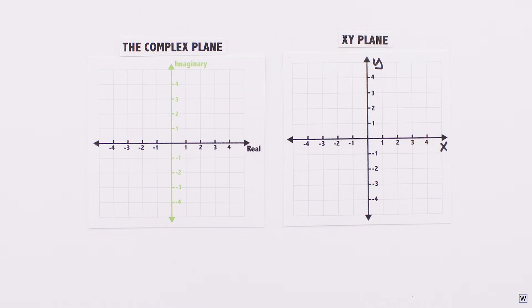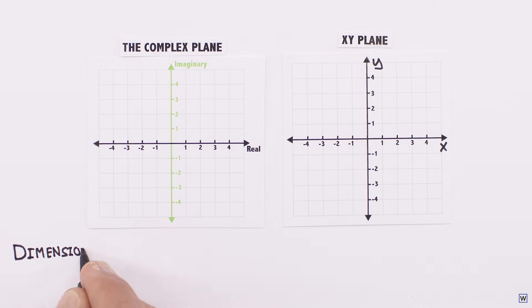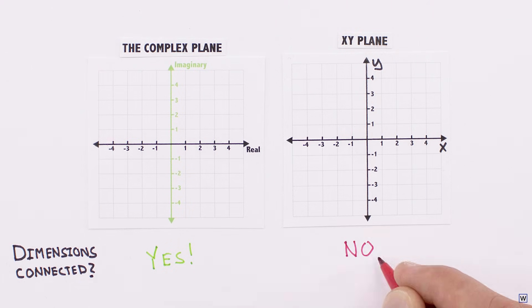On the complex plane, however, we have the rules of algebra with complex numbers we discussed earlier. These rules impose a very specific and useful relationship between the two dimensions.